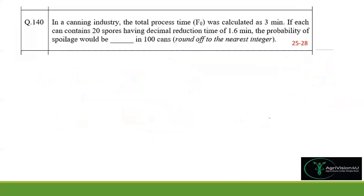Coming to question number 140: in a canning industry, the total process time F₀ is 3 minutes. Each can contains 20 spores having a decimal reduction time (D value) of 1.6 minutes. We need to find the probability of spoilage in 100 cans.